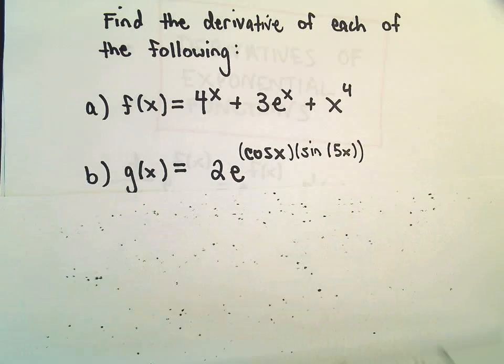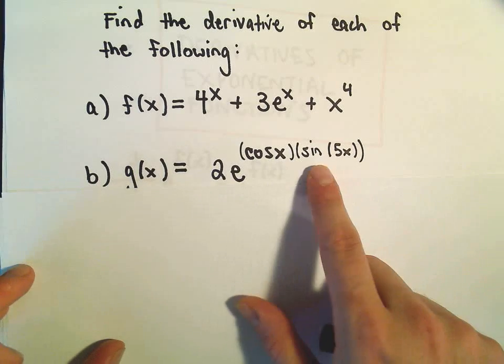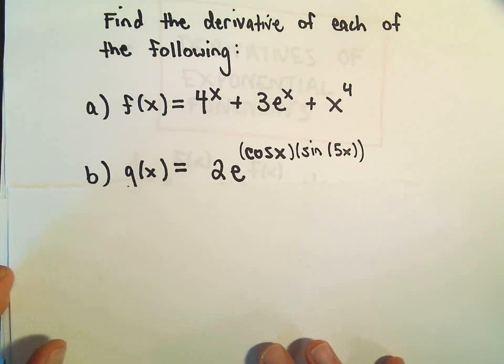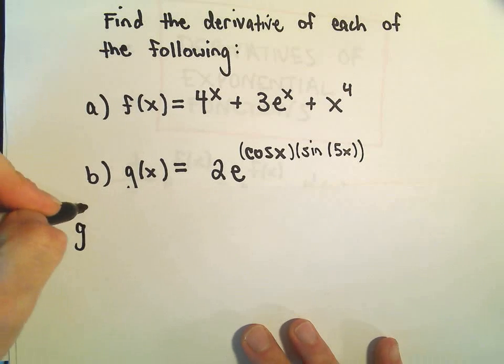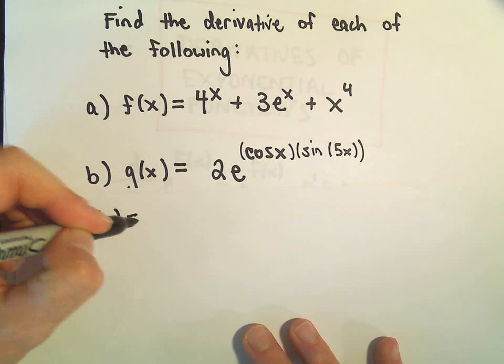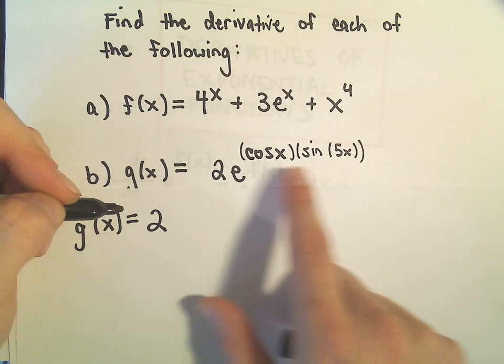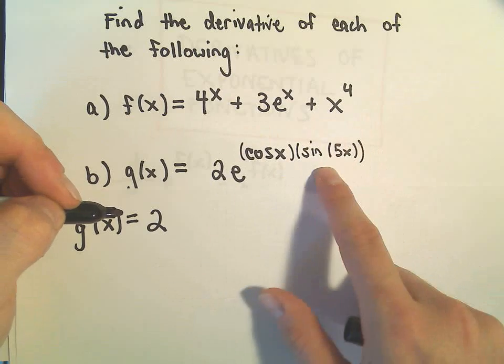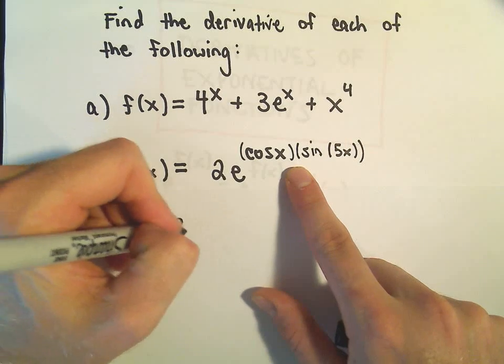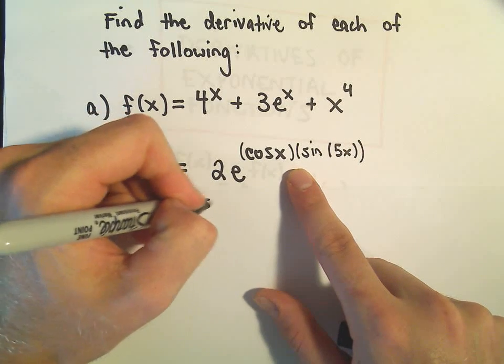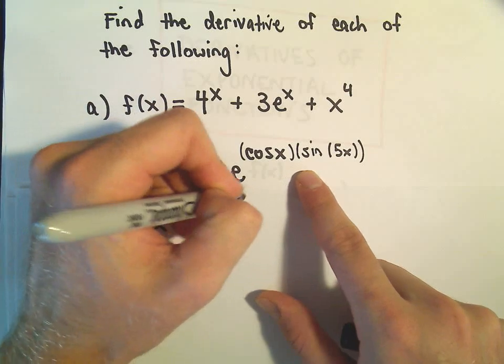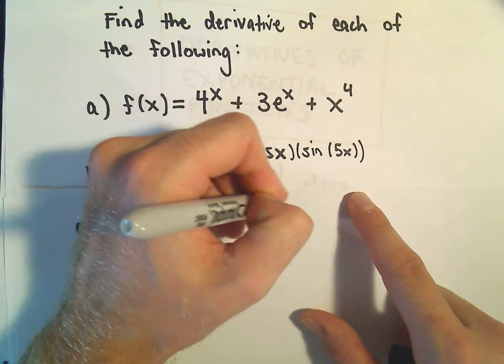Now for part b, we have 2e to the cosine x times sine of 5x. So in this case, the chain rule will get used a little bit more. So when we take the derivative, the 2 just comes along. Again, we have e, you can think about all of this as being our f of x. So again, it just repeats. So we get e to the cosine x times sine of 5x.